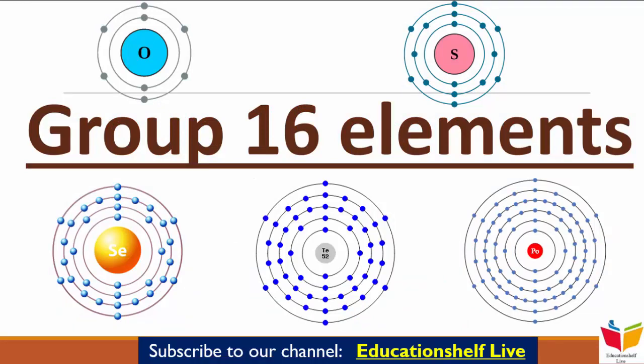Oxygen, Sulfur, Selenium, Tellurium, Polonium and Livermorium constitute Group 16 of the Periodic Table. इनको हम कभी-कभी Group of Chalcogens भी बोलते हैं। ये name जो है, वो Greek word से derive हुआ है, जिसका मतलब होता है Brass।